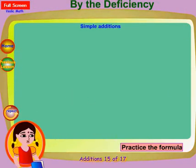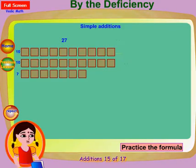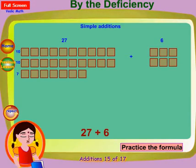Let's use the sutra by the deficiency to make addition simple. The number 27 is 3 deficient to be 30, that means 27 is 3 less than 30. If we are adding 27 plus 6, we take 3 from